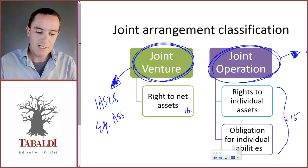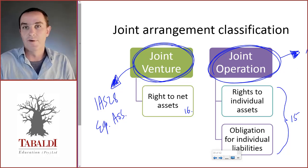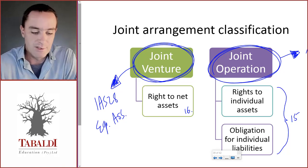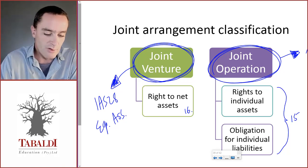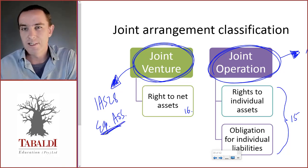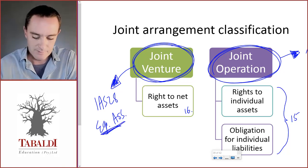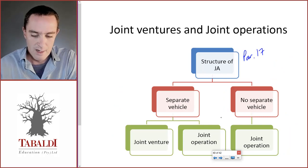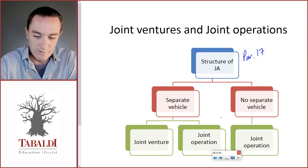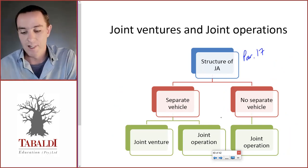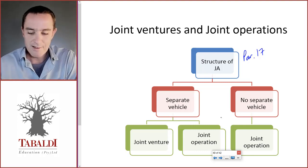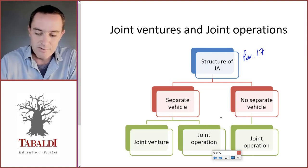In a calculation question, they will tell you it is a joint venture or an investment in associate if they want you to apply equity accounting. When considering whether it is a joint venture or joint operation, we look at the structure of the joint arrangement as set out in paragraph 17.